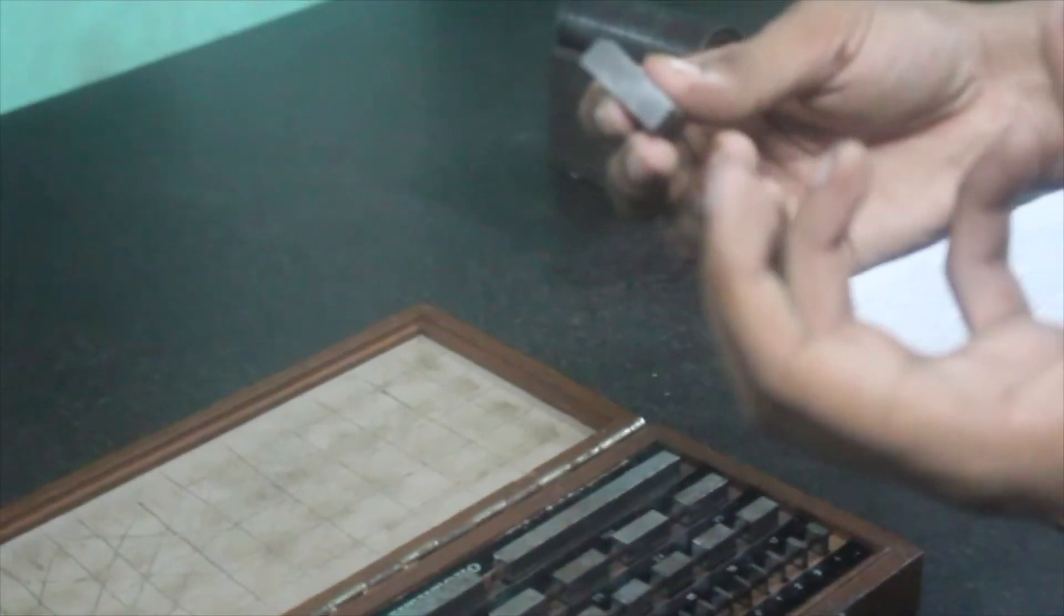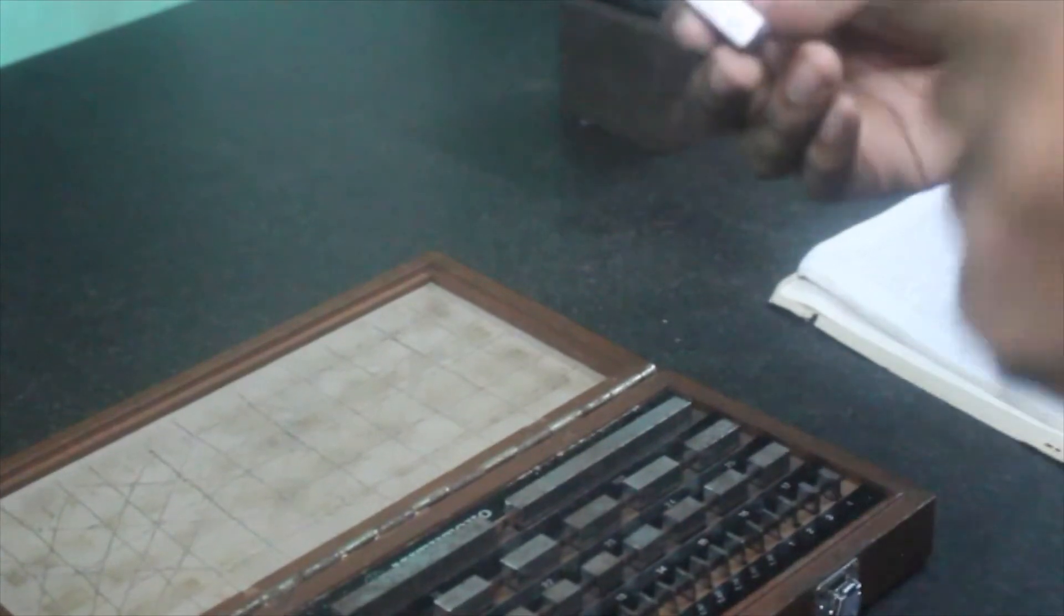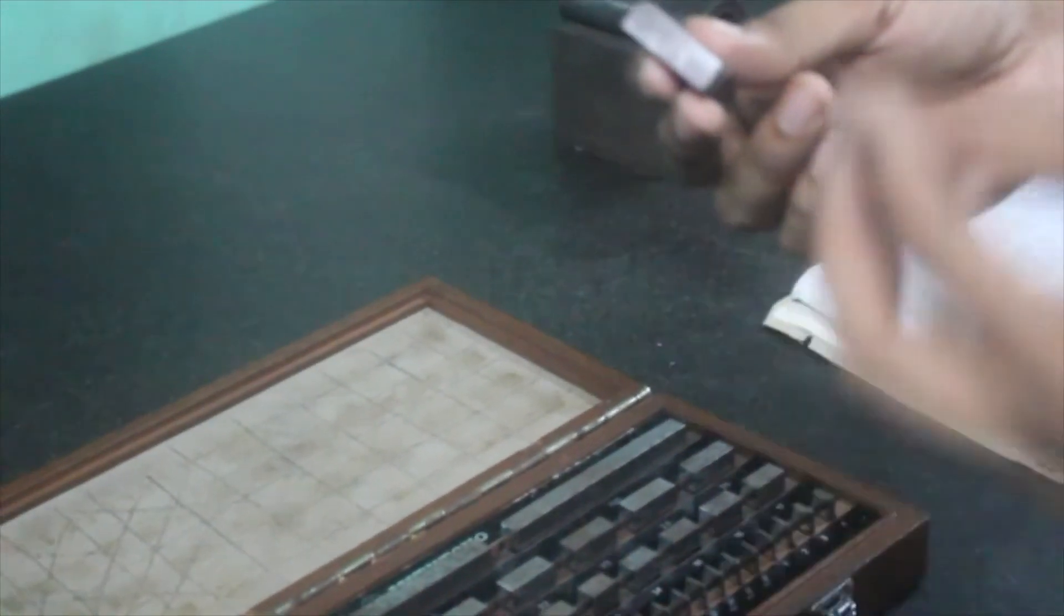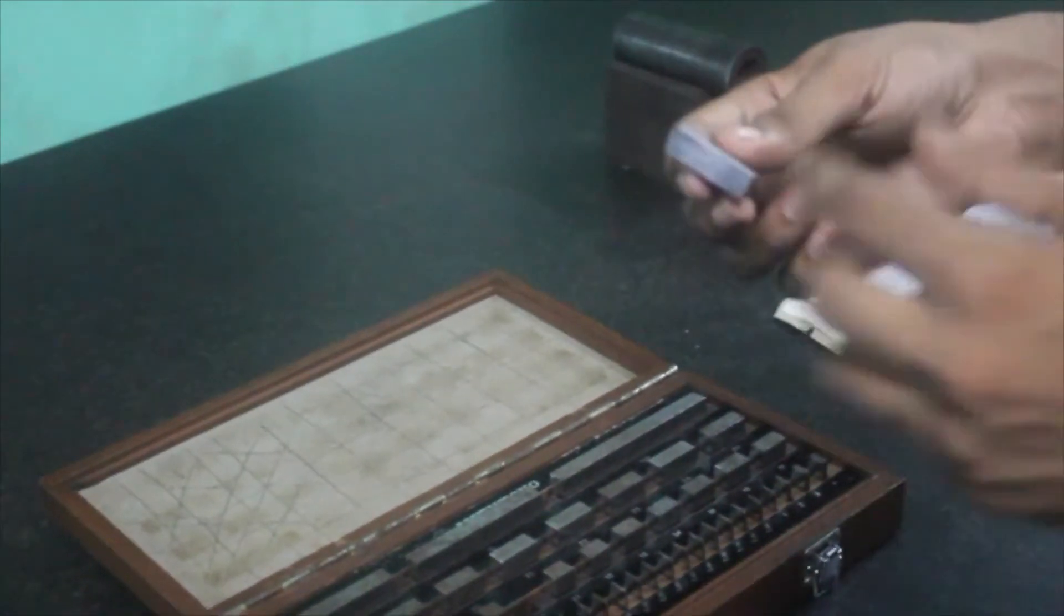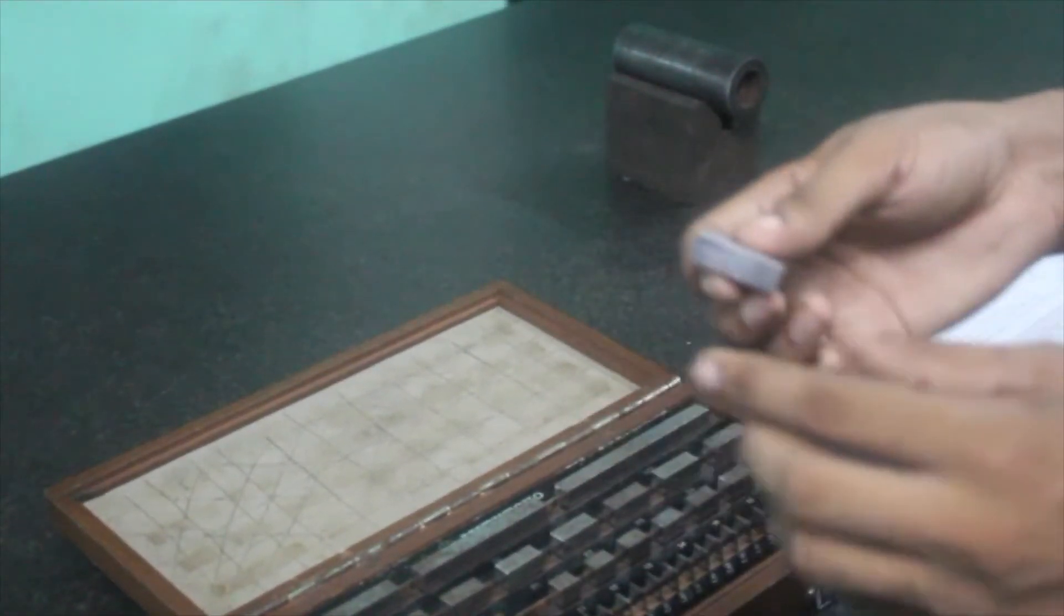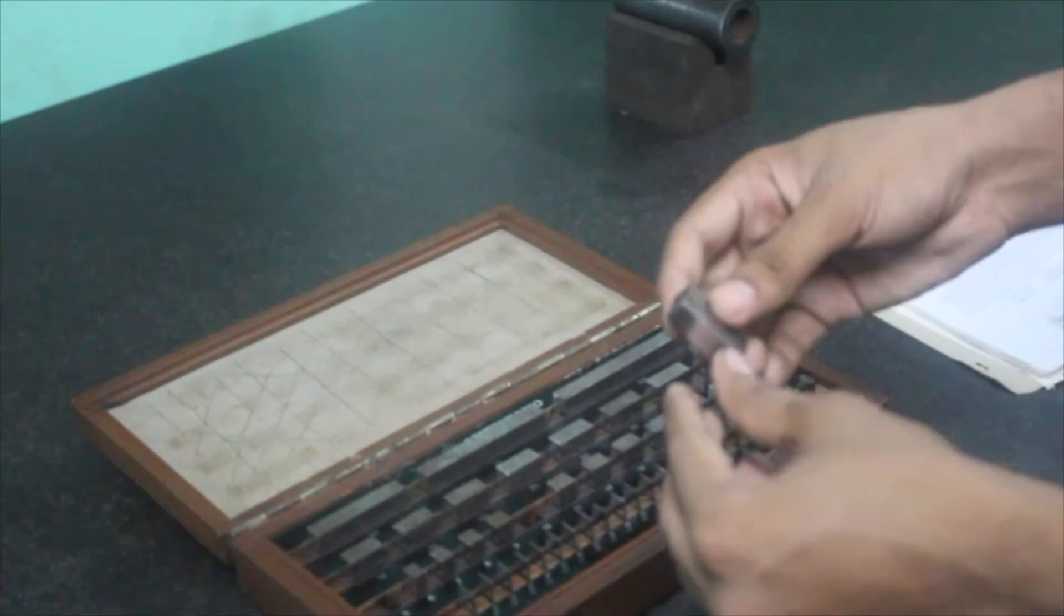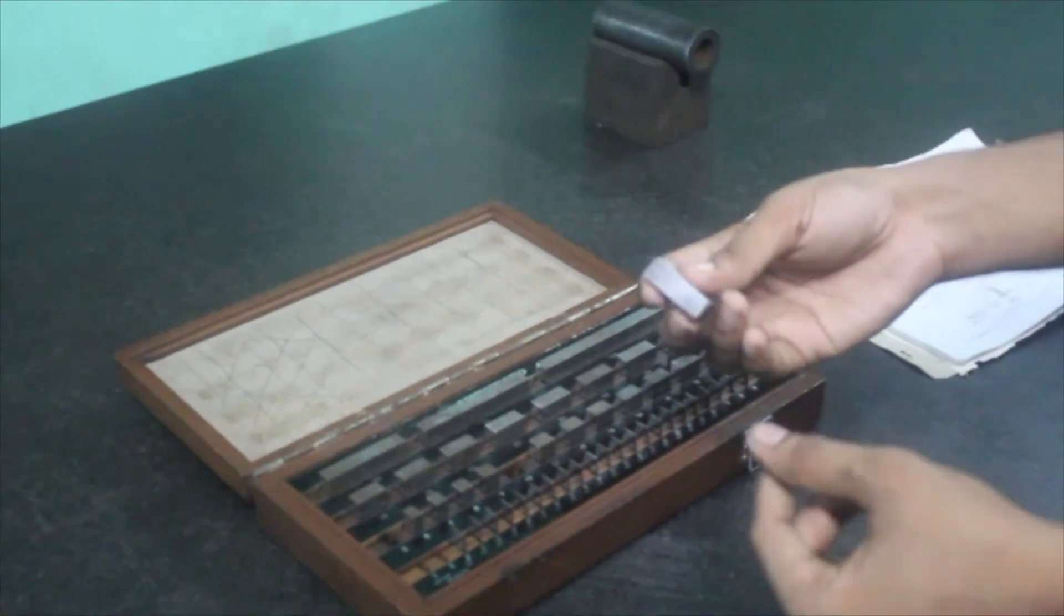Molecular adhesion occurs because the surfaces being wringed are ultra flat, such that molecular attraction occurs. Also, the air pressure from outside attaches these two blocks together. This is how wringing is done.